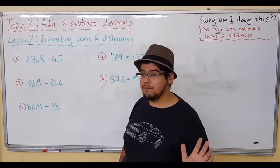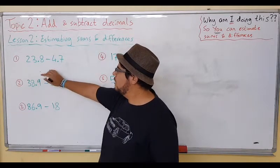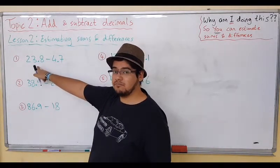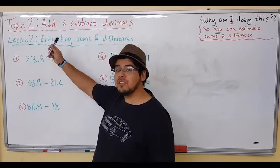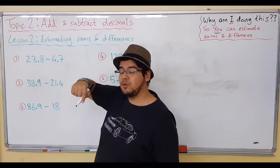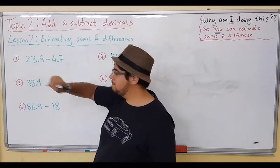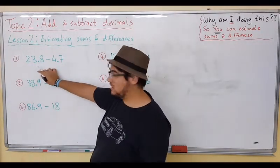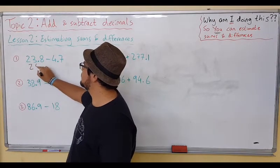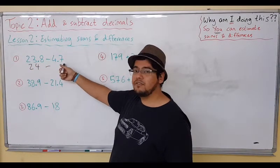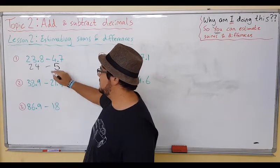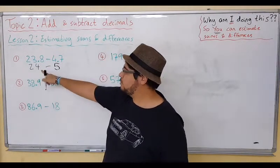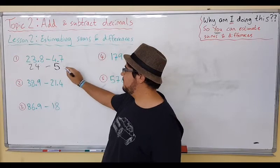We can easily change this: 23.8—the 8 rounds up. Remember from Topic 1 we did the rounding up or down. This can become 24, easy. It's so close. Subtract 4.7, which is close to 5, so we can estimate it as 24 subtract 5, which is 19.